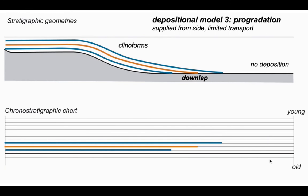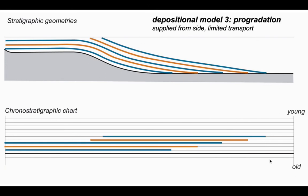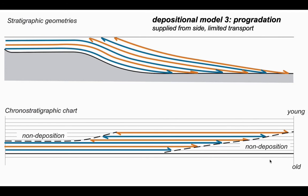Continuing to fill the basin, the shallow water area becomes full and subsequent sediment packages are all confined to the slope. Interpreting the stratal terminations, we identify areas of non-deposition on the chronostratigraphic chart: on the left, deposition is limited by lack of accommodation space; on the right, non-deposition results from sediment being unable to run out across the basin floor. We can label the terminations — downlap and top lap — and find them on the chronostratigraphic chart.